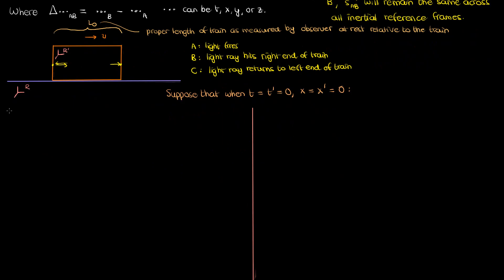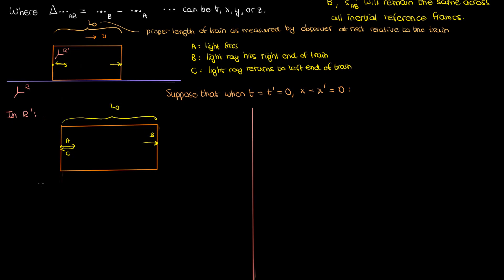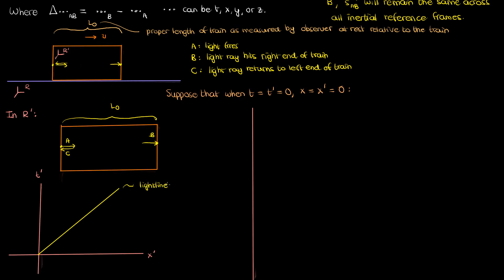Let's now examine these events from the point of view of observers in both reference frames. We'll start with reference frame R', which is a pretty simple scenario. To an observer in R' — somebody inside the train — the ray of light starts firing at event A, travels a distance L0 to the right end at event B, and then travels back a distance L0 to the left end at event C. I can draw a spacetime diagram with t' as my time coordinate and x' as my spatial coordinate. The world line of light will be a straight line at a 45-degree angle. I've ignored the y and z directions here because there's no motion along those directions.